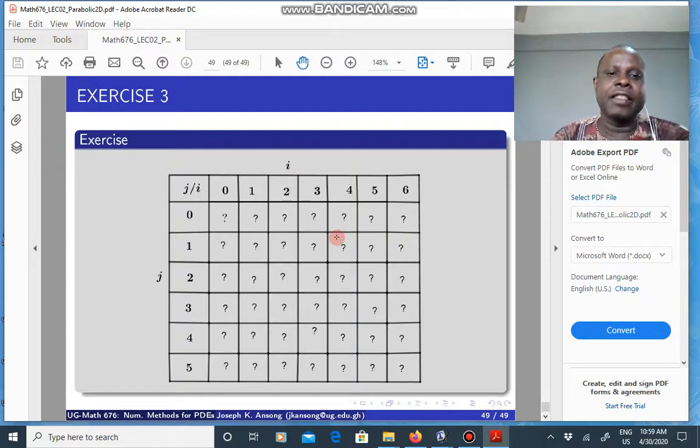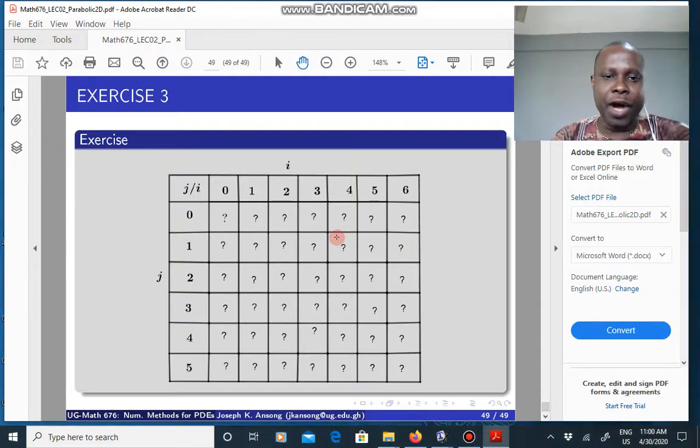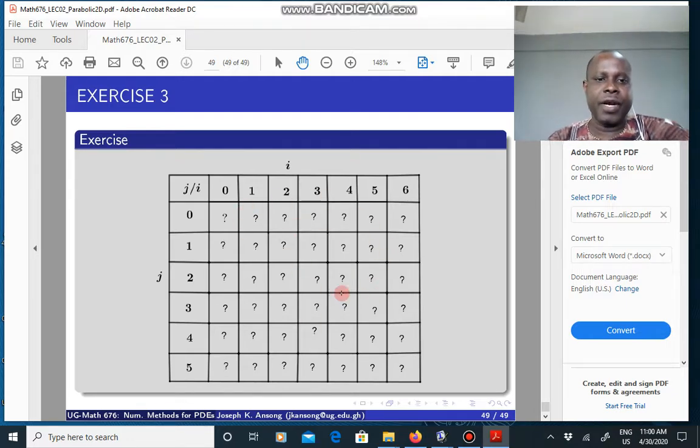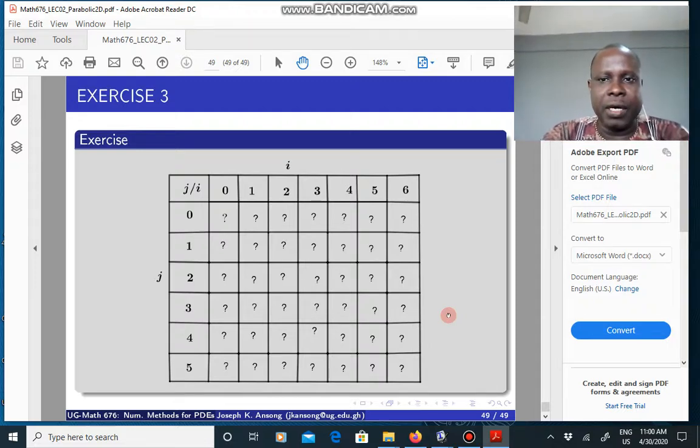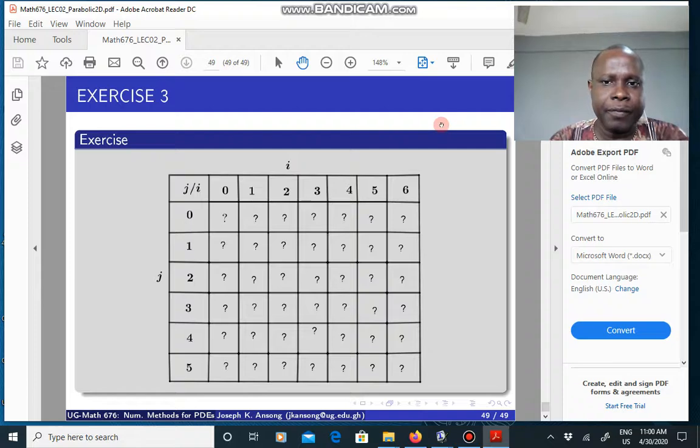That is for n equals 0. And then when n is 1, you are going to have two tables again, one for the u tilde and the other for the final u solution. These are your i's when i is 0 all the way to 6 as well as when j is 0 to 5. So that will be an exercise I will set up for you. That will be it for the parabolic equation in 2D. Once we are done with this, we will move on to the next step. I think we will be looking at hyperbolic equations also. So all the best.